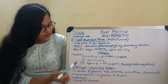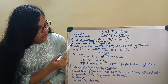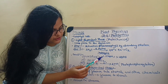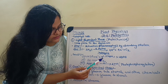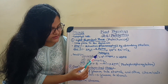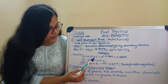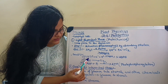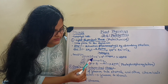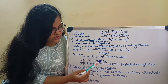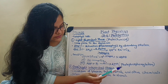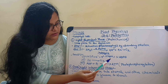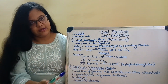Photolysis is the splitting of water molecules into its constituent elements and electrons in the presence of light. The result is that the H+ ions produced by photolysis are taken up by NADP — which stands for nicotinamide adenine dinucleotide phosphate — in the presence of electrons and enzymes to create NADPH. The function of NADPH we will learn in higher classes.